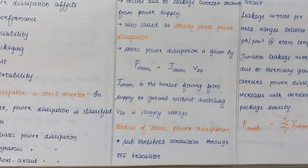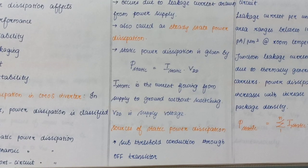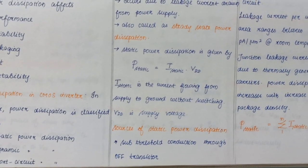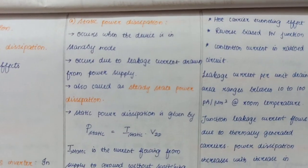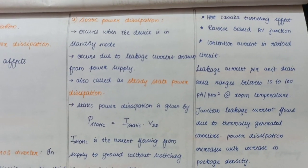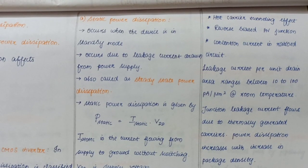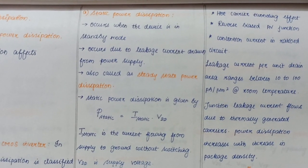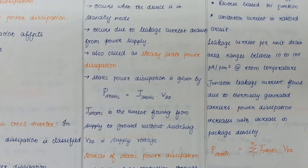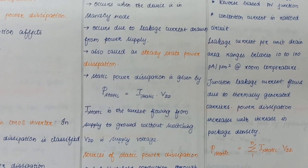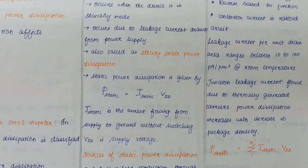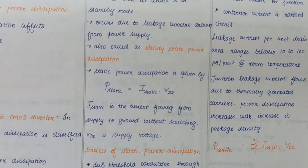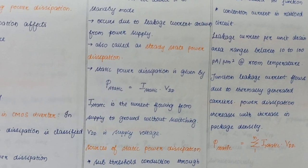Now, sources of static power dissipation: subthreshold conduction through off transistor, hot carrier tunneling effect, reverse biased PN junction, and contention current in ratioed circuits. Leakage current range per unit area will be around 10-200 pico amps per micrometer square at normal room temperature.